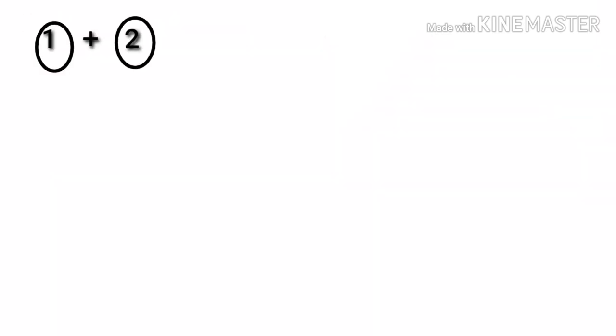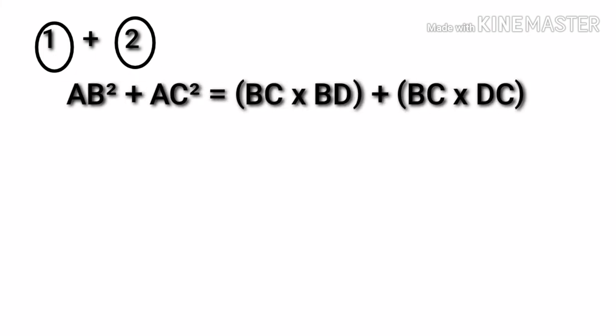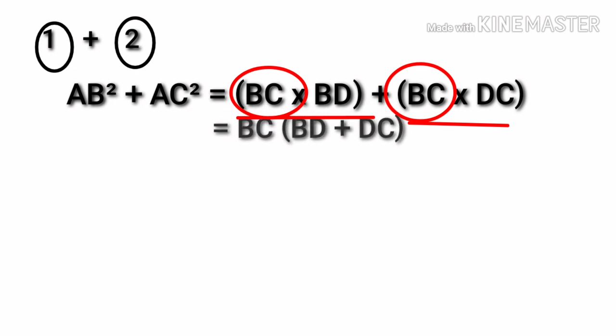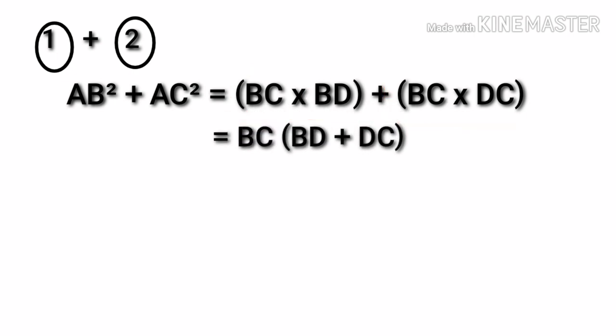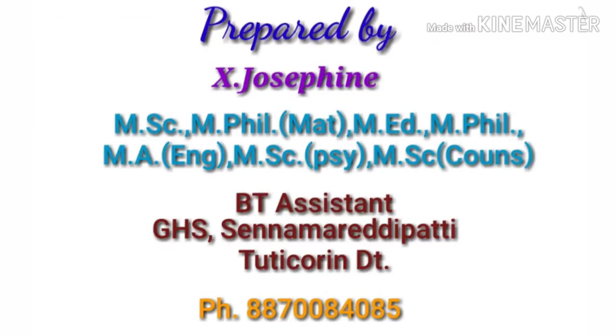Adding first equation and second equation, we get AB square plus AC square is equal to BC into BD plus BC into DC. In both the terms, BC is common. So BC into BD plus DC. BD plus DC is nothing but BC. So BC into BC, that is BC square. Hence the theorem is proved.